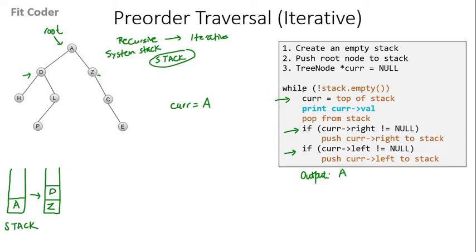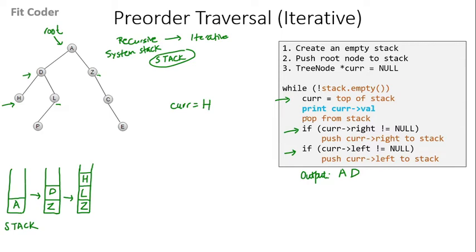We again check the while condition — the stack is not empty — and we initialize current to the top of the stack, which is D. We print the value of D and pop it from the stack. We check if current's right is not null: right of D is L, so we push L to the stack. We check left of D: left of D is H, so we push H to the stack. We come back to the while condition — stack is not empty — so we initialize current with top of the stack, which is H. We print H and pop it. We check right of H: right of H is null, and left of H is also null, so both conditions are false.